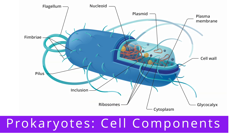Within prokaryotic cells, you can also find inclusions, which are structures that store excess nutrients. Examples of inclusions include carboxysomes, which store enzymes that allow bacteria to fix carbon dioxide, or gas vacuoles, which store gas and allow the cell to adjust its buoyancy. More gas in the inclusion will make the cell more buoyant.